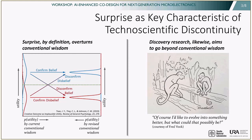It is this last permutation — the one that combines surprise and utility — that is the epitome of creativity. The potential new knowledge is useful, and just as importantly, that usefulness was surprising. Conventional wisdom mispredicted the utility and must be revised. This is exactly what discovery research — the kind associated with the Office of Basic Energy Sciences — aims for: to discover new knowledge that goes beyond what conventional wisdom can predict or even imagine. It is like these monkeys on the right — evolving into humans is beyond what they can imagine.